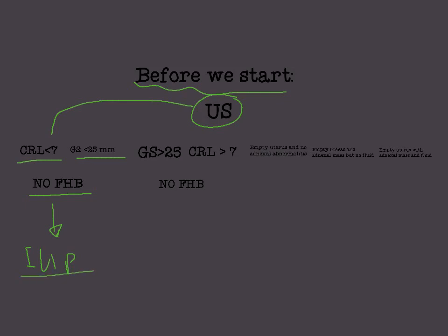This is an intrauterine pregnancy of unknown viability. It is intrauterine pregnancy because on ultrasound we saw a crown-rump length and gestational sac. It is of unknown viability because we have no fetal heartbeat.